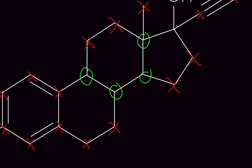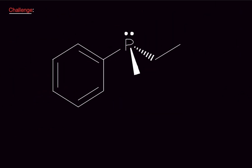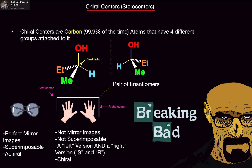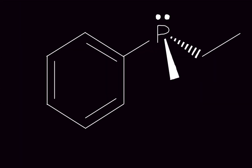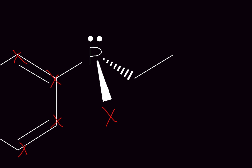Here's a challenge problem: is this molecule chiral? Think carefully about what was said at the beginning — chiral centers are carbons 99.9% of the time, not always. After eliminating double bonds and CH3/CH2 groups, we are left with a phosphorus atom. Is this a chiral center even though it's not carbon? Yes — chiral centers can exist on atoms other than carbon; this is one exception.